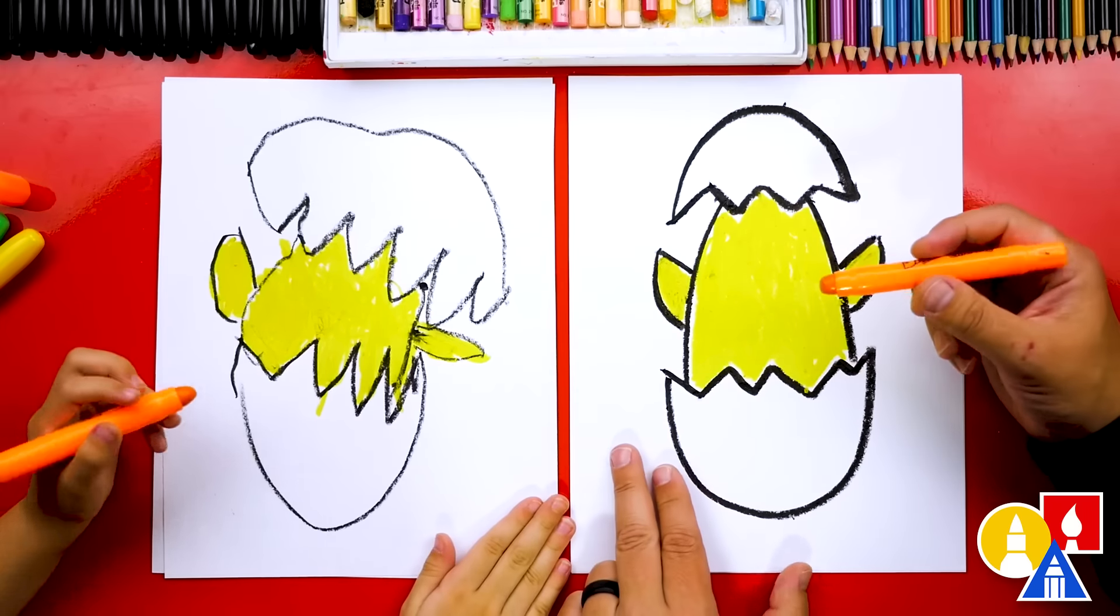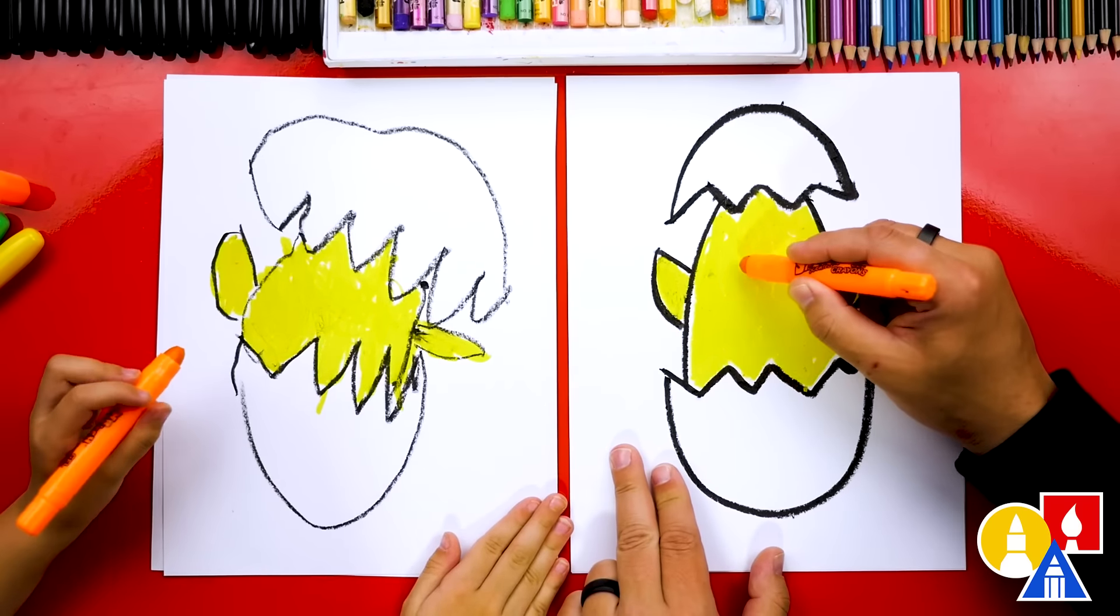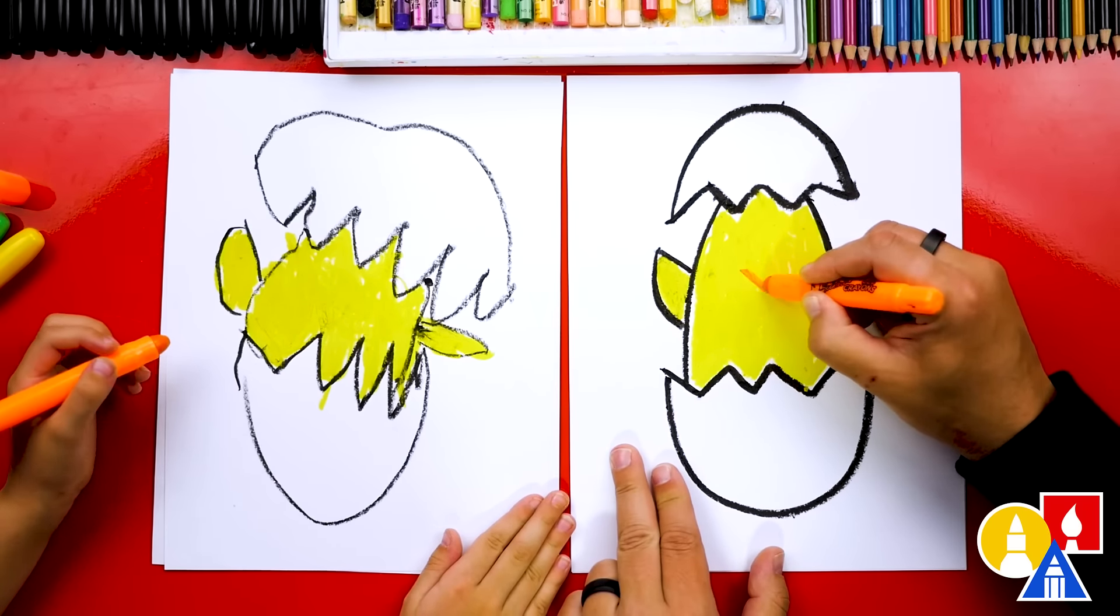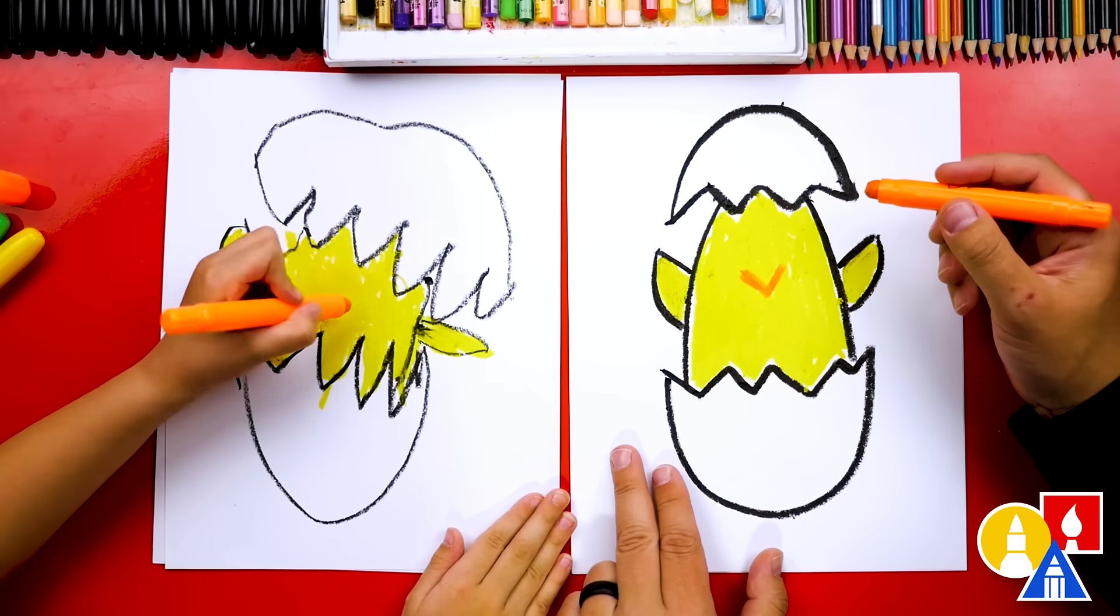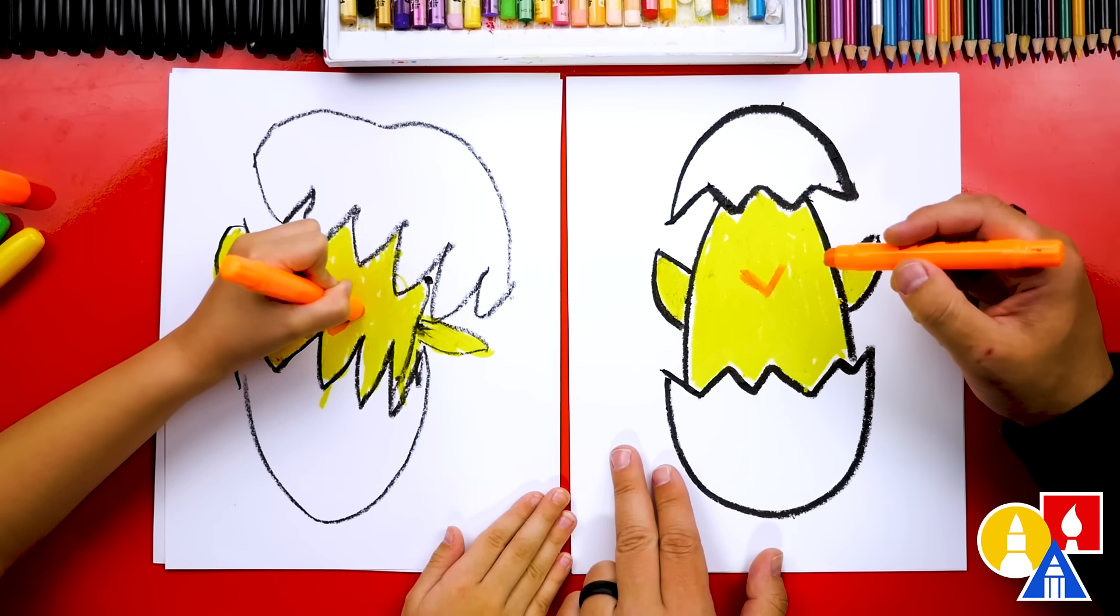Now we're ready to switch to our orange crayon and we're going to draw the beak. Let's draw the letter V right in the middle of our baby chicken. Letter V. Down and then back up. Yep.